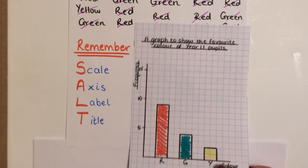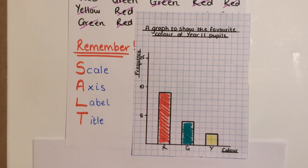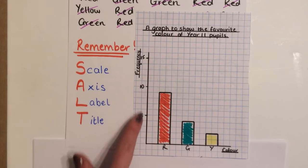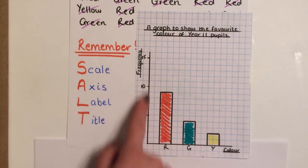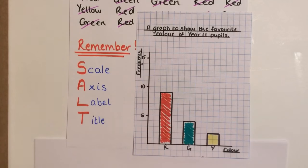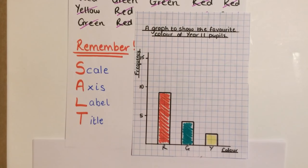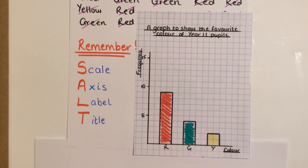Take a look at mine. Do a little checklist for me. Have I got a scale? Yes. Do I have axes? Yes. Have I got labels? Yep. Do I have a title? Yes. Checklist complete.